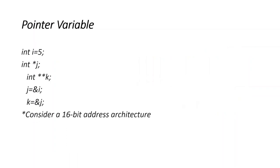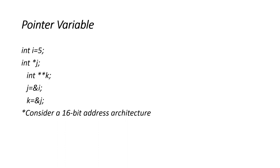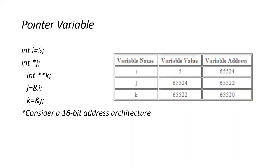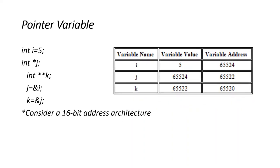For int i, value is 5 located at address 65524. j is a pointer variable that can hold the address of an auto variable i. In a similar way, k is a double pointer variable which can hold the address of a single pointer variable j.